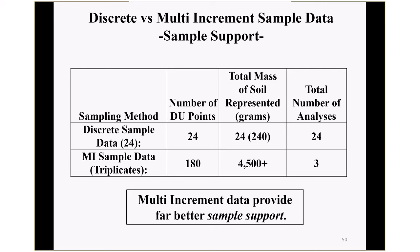Looking at sample support: what mass of soil does your sample data actually represent? At our study sites with 24 grid points each, discrete sample data for metals represented only about one gram per sample — 24 grams total, about a spoonful of dirt. The PCB site, maybe 240 grams — a small handful — with the lab charging us for 24 analyses. Our multi-increment sample data, by contrast, involved testing 180 points within each targeted area, with mass of soil represented over 4 kilograms, with only three samples tested by the laboratory. Multi-increment sample data provide far better sample support.